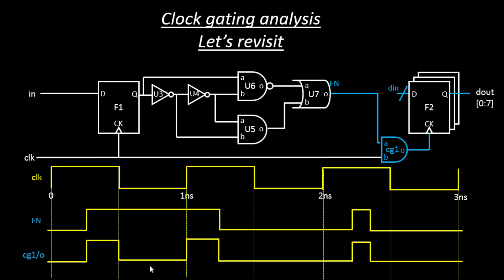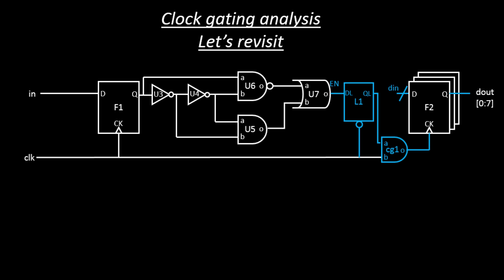To get rid of this, we added a clock gating check. But what if we try to solve this problem by construction itself — by adding some logic here so that the checks are inherent and we don't need a separate clock gating check? The best way is to add a latch at this point. The enable pin is connected to the input of the latch, and the output of the latch is connected to the A pin of your clock gating cell.